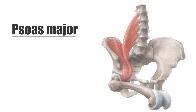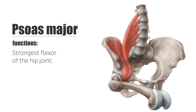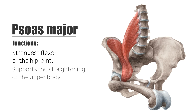The iliopsoas muscle is the strongest flexor of the hip joint, a function which is important for walking. In the supine position, it decisively supports the straightening of the upper body, for example during sit-ups.